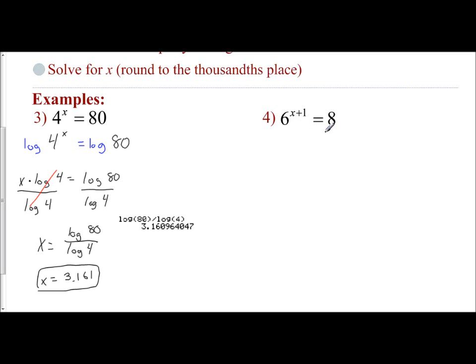We can't find a common base for these. So to get the variable out of the exponent, I'm going to take the log of both sides. The log of the left side and the log of the right side. So I'm going to take the log of 6 to the x plus 1 power and the log of 8. So log of 6^(x+1) equals the log of 8.